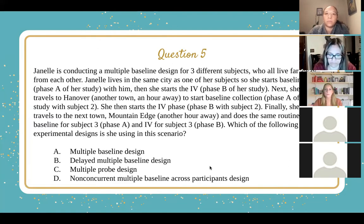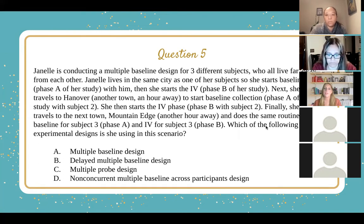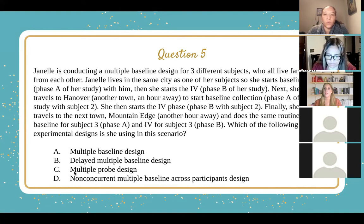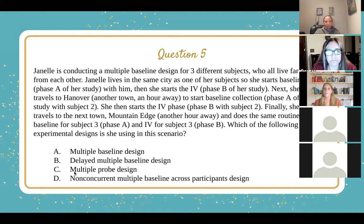Now on to question five. Janelle is conducting a multiple baseline design for three different subjects who all live far away from each other. She starts baseline — phase A — with subject one in her city, then starts the IV, phase B, with him. Next she travels to Hanover, an hour away, to start baseline collection — phase A — with subject two, then starts phase B. Finally, she travels to Mountain Edge, another hour away, and does the same: baseline phase A and IV phase B for subject three. What experimental design is she using?